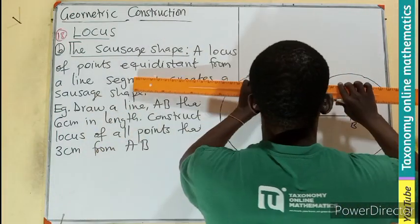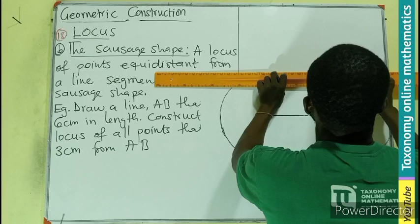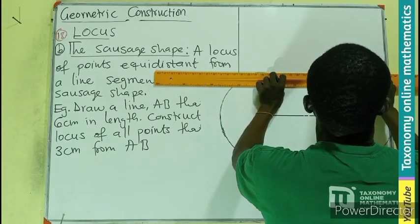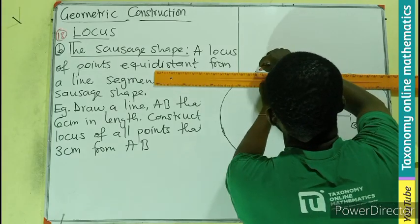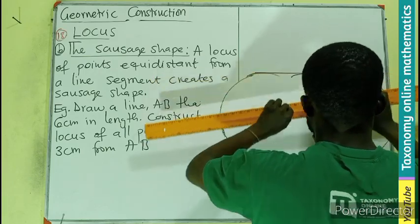Then let's join the outside of the line we have drawn, the arcs that we have drawn. So if I join this place with a straight line, joined below with a straight line.